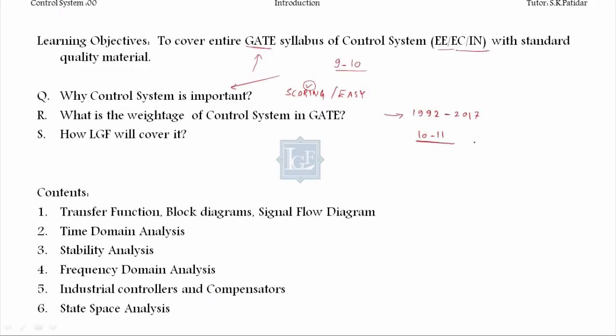Out of 100 you have 10 to 11 allotted for control system only. Now why the subject is easy? Friends, out of 10 to 11 marks, it's very easy to get 9 to 10 marks if you have thorough knowledge of the control system.